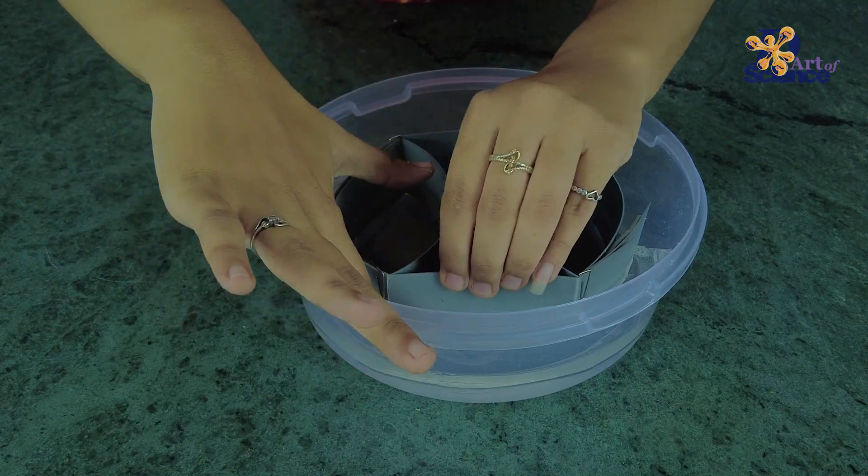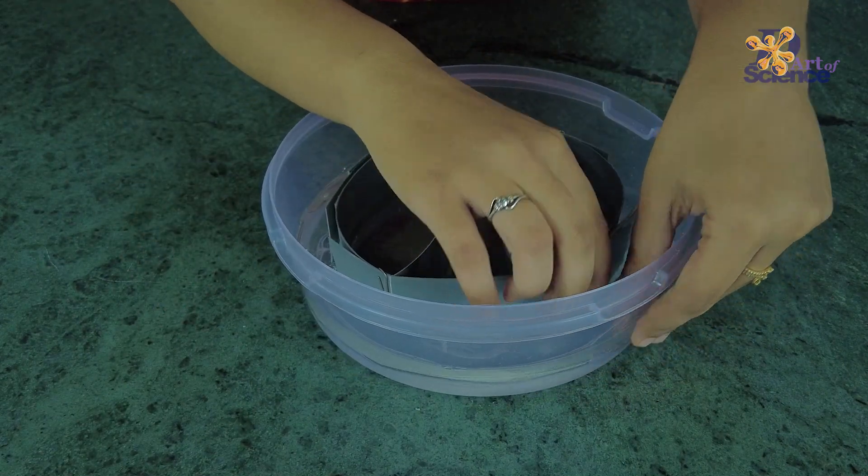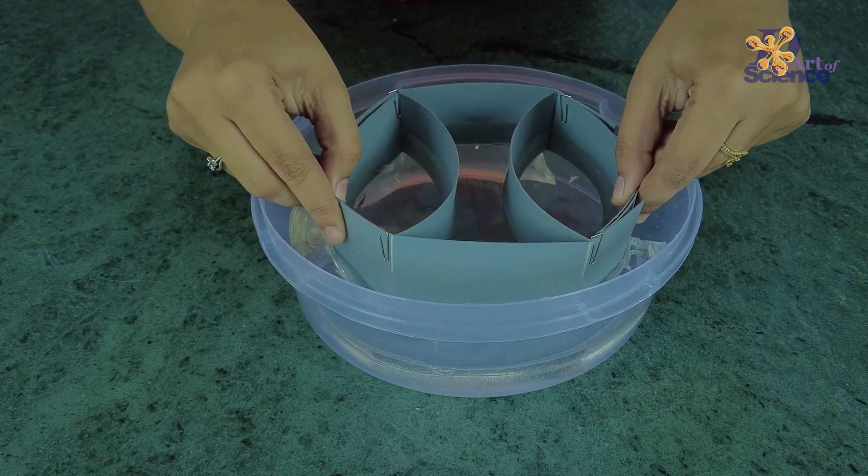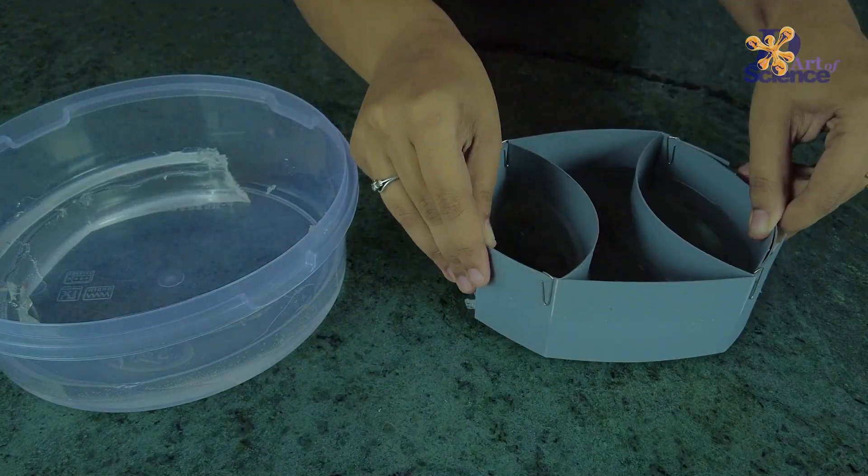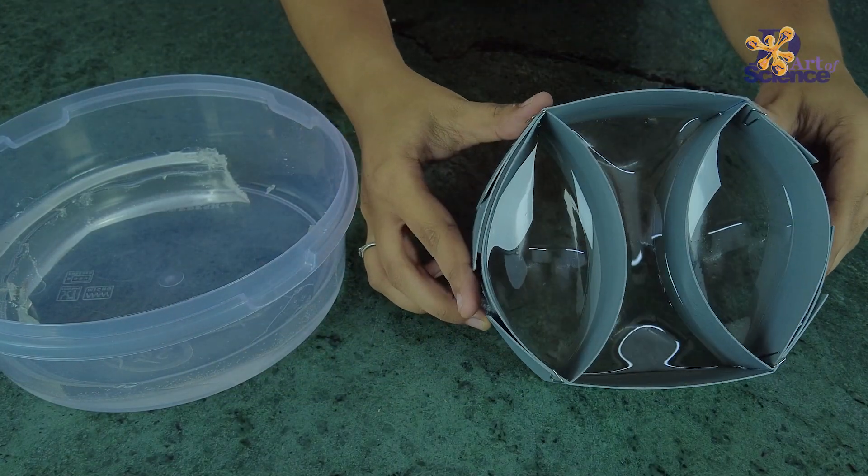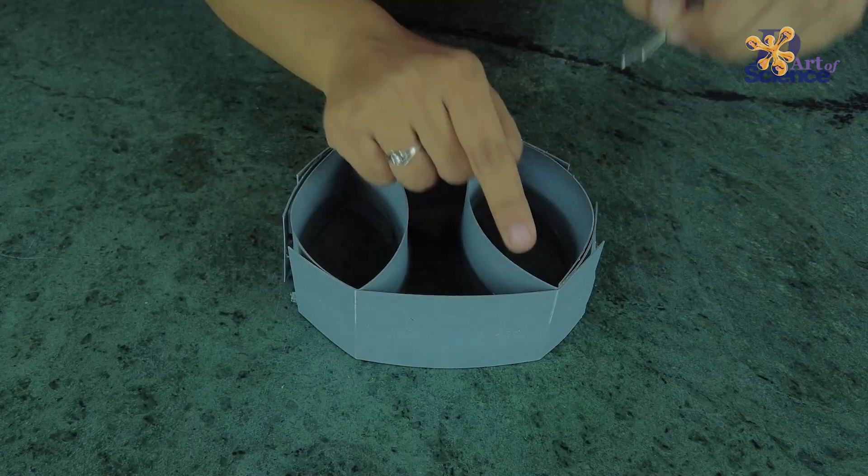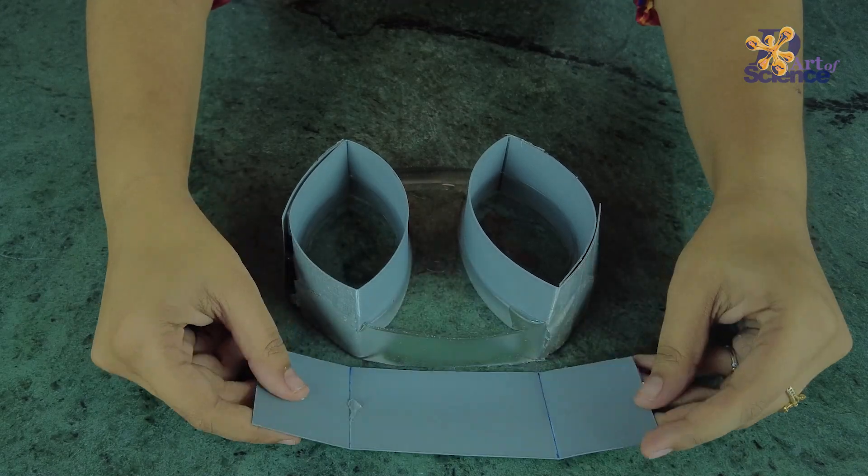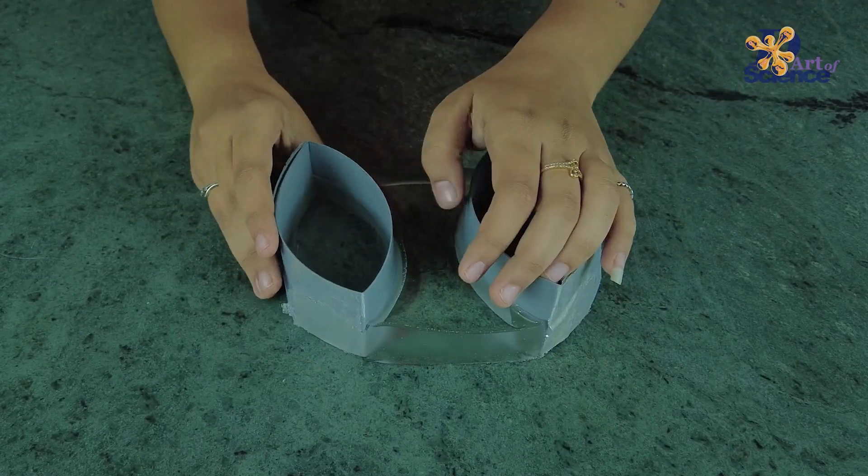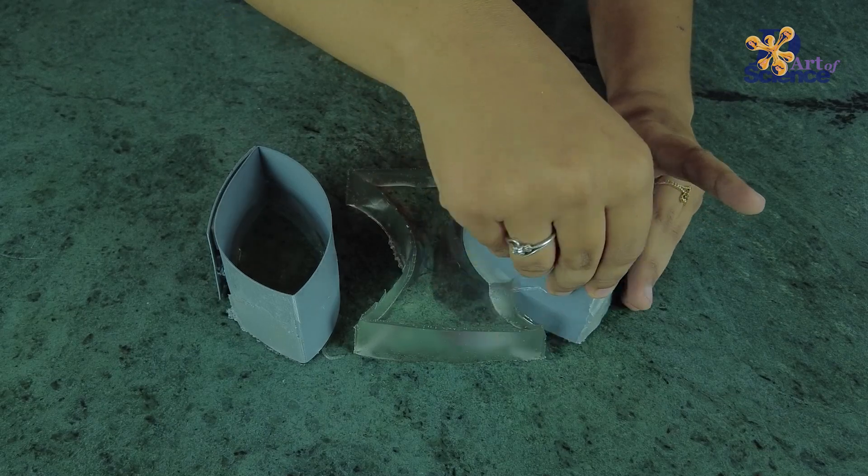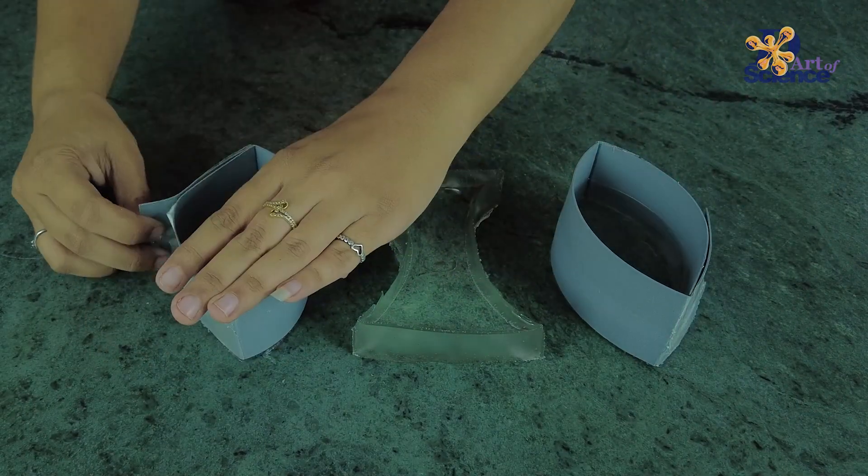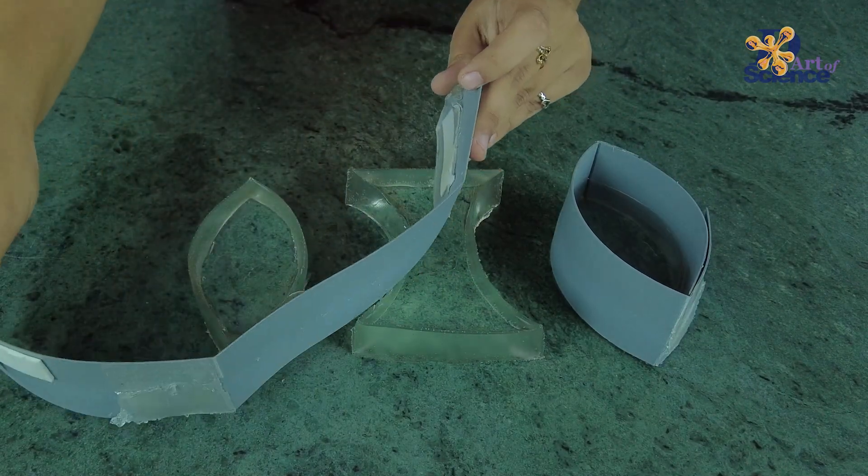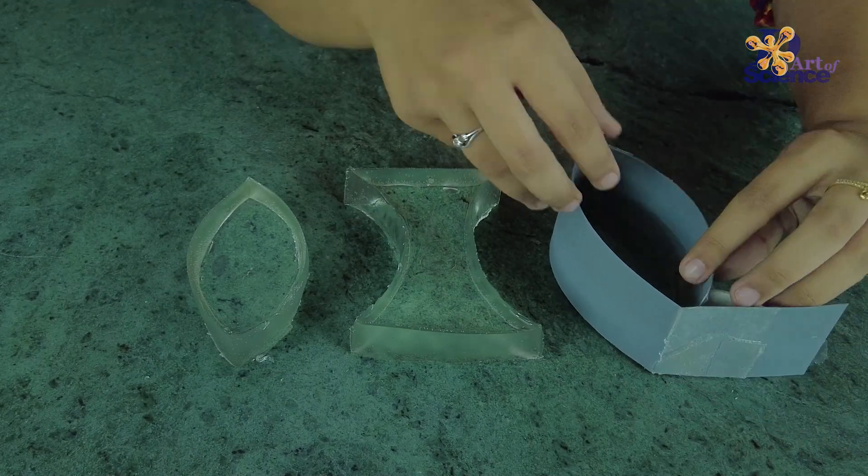Once it cools down, slowly push the outer wax and gently remove the mold. Start removing the paper clips, tapes, and disassemble the mold slowly. And that's it, the lenses are ready.